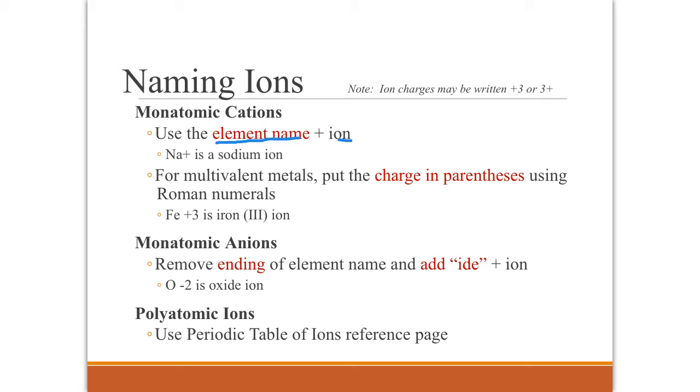For the multivalent metals, you put the charge in parentheses using Roman numerals. So when you come up with a name, if you have iron that has a plus three charge, then you would write it as iron with a three in Roman numerals in parentheses, ion. Iron three ion.